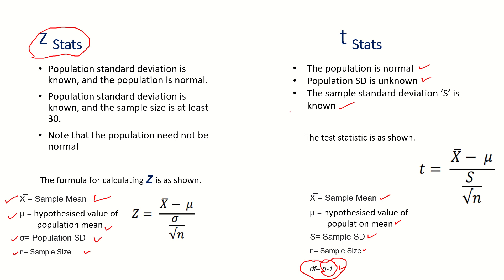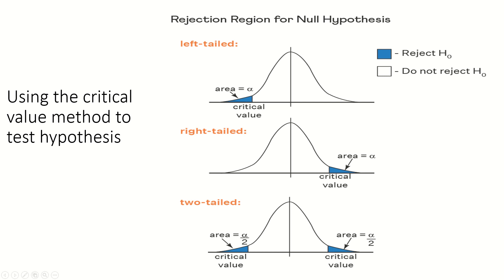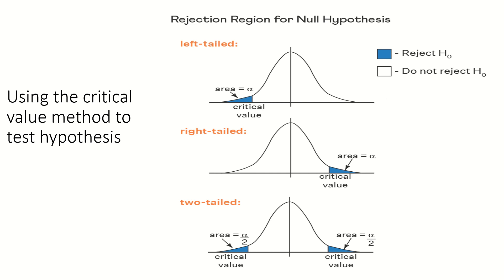We must remember this difference between Z and T. Now we must understand the role of the critical value in accepting or rejecting the null hypothesis. The critical value divides the whole distribution — whether it is a T or Z distribution — into two regions.